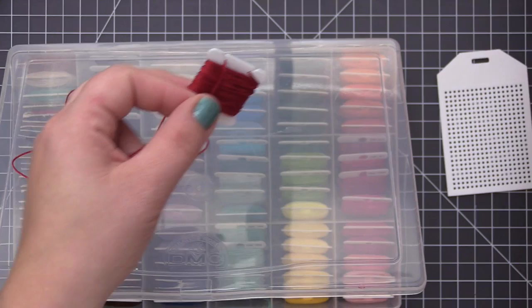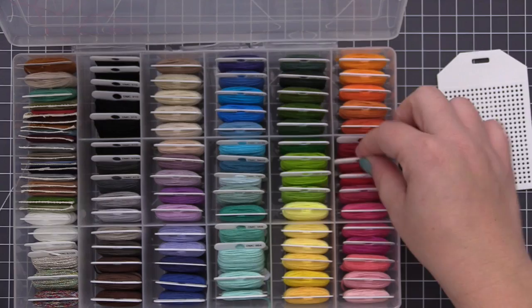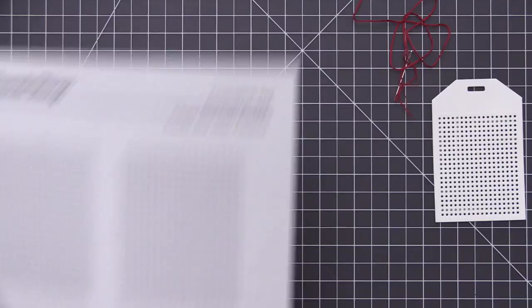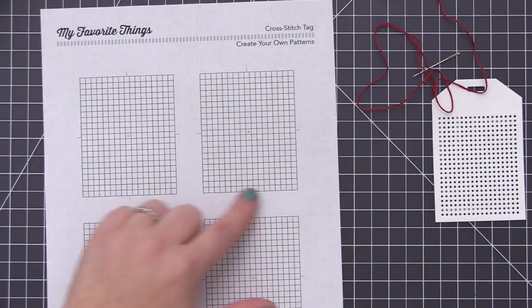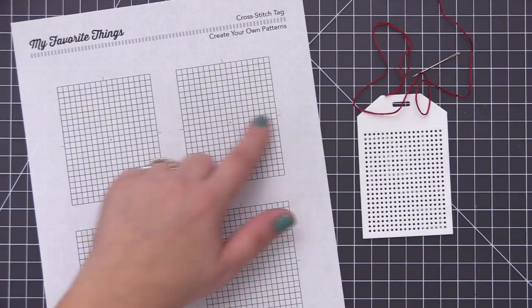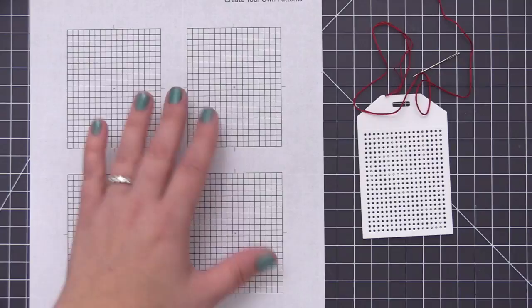Before we get to that, I want to show you something we've created that is going to make working with these tags a lot of fun. This is the cross stitch tag create your own patterns download, and you can get this on our website. This gives you four different rectangle sections sized perfectly to go with the tag. This is going to allow you to create your own patterns with markers, color in the different patterns and then translate that onto the tag.